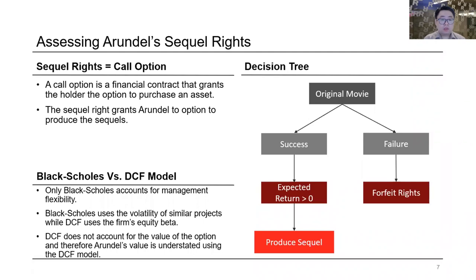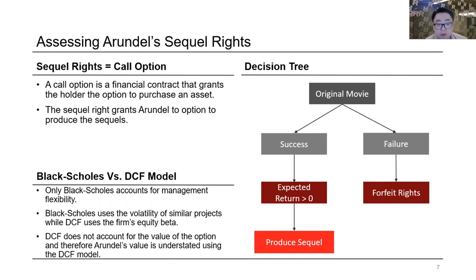We were also tasked to assess whether the average $2 million per sequel right is a good investment using an alternative to the DCF. Arundel's business model is buying sequel rights to original movies before they're even released, because studios only produce sequels if the originals are successful — so sequel rights can be bought cheaply upfront. We can use the Black-Scholes option pricing model because this arrangement is similar to a call option that grants the holder the option to buy an asset; the holder only exercises if the market price exceeds the exercise price.